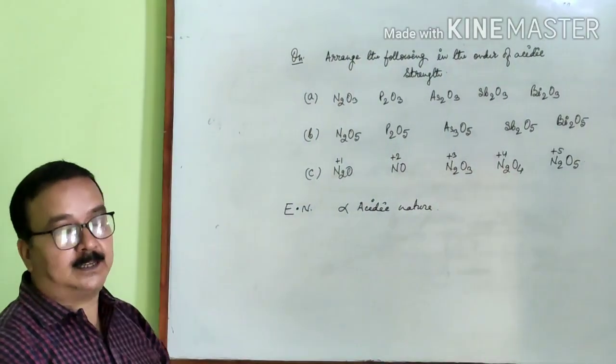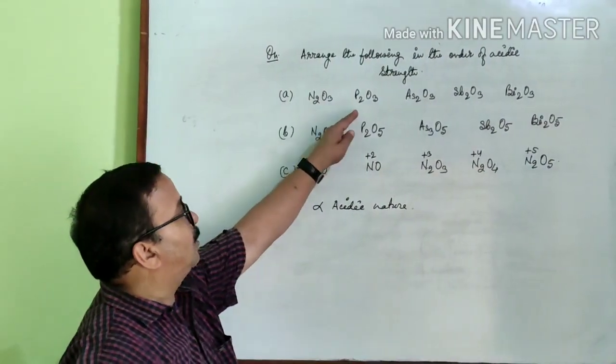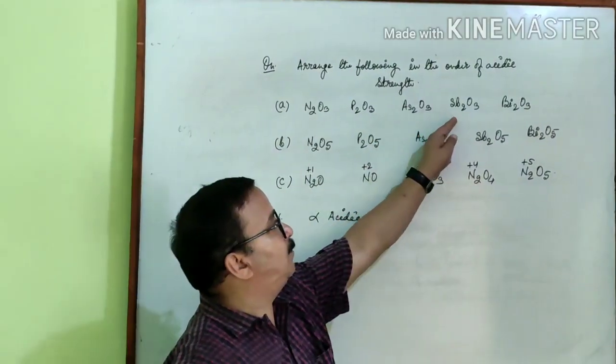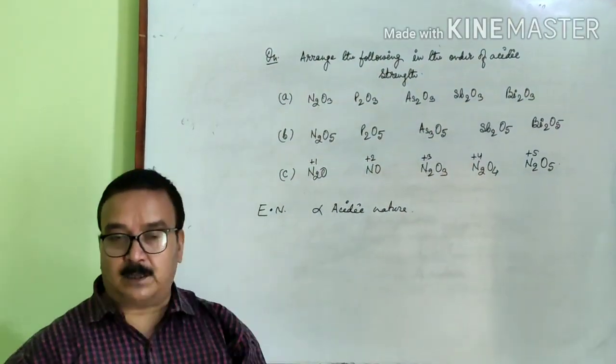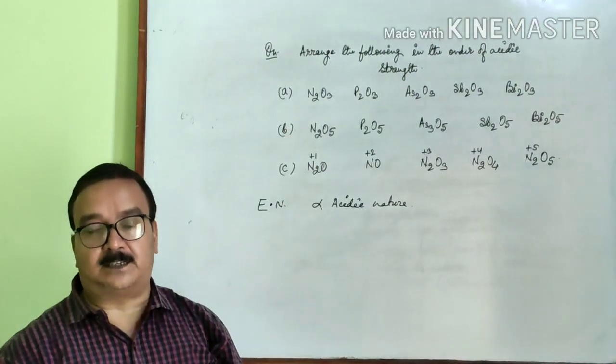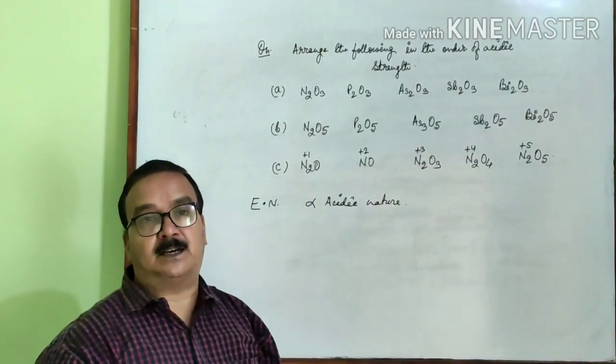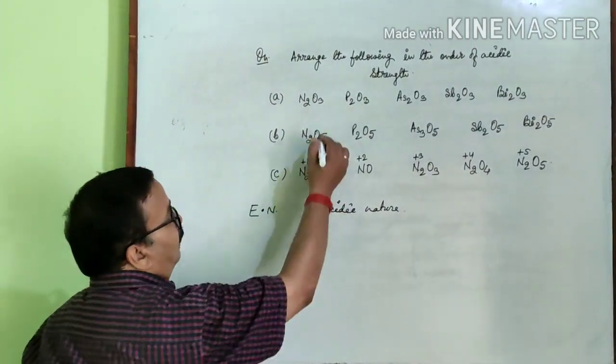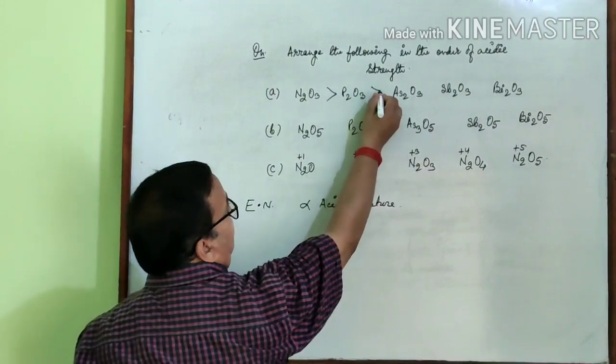Number A: we can see that nitrogen, phosphorus, arsenic, antimony, bismuth. Down the group acidic nature decreases, so nitrogen is most acidic then phosphorus, therefore the order will be this one.